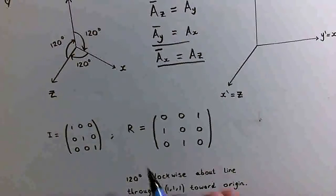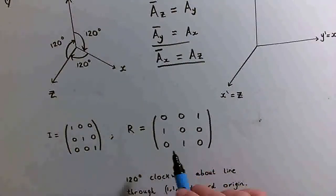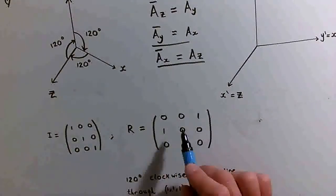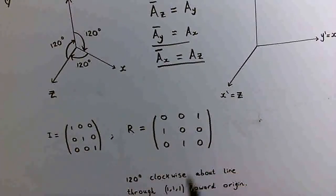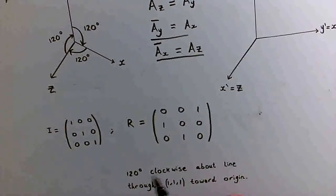So there it is. This rotation matrix - 0, 0, 1; 1, 0, 0; 0, 1, 0 - represents a 120 degree clockwise rotation about the line through the point (1,1,1) towards the origin.